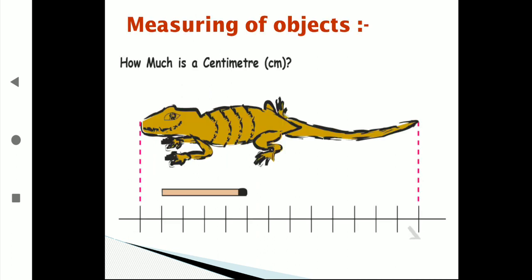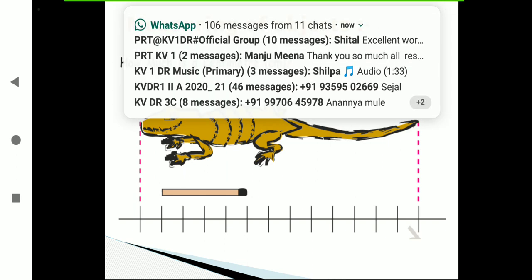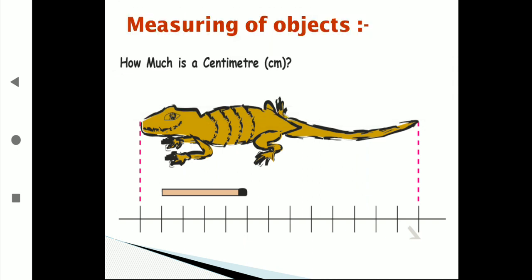Now you can see some pictures. We will measure objects using centimeter. All these marking points represent centimeters. You can see a lizard — find out the length of the lizard from its tail to its head by counting how many boxes are under it. Counting: 1, 2, 3, 4, 5, 6, 7, 8, 9, 10, 11, 12, 13. So the length of this lizard is 13 centimeters.